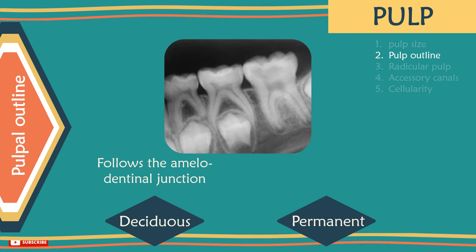Pulp outline: it follows the amelodentinal junction more closely in primary teeth. Therefore, the cavity floor should follow the external contour of the tooth sinuously to avoid pulp exposure.